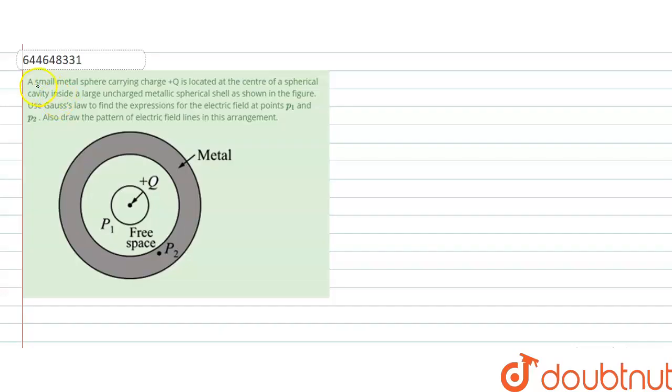The question is that a small matter sphere carrying charge plus Q is located at the center of the sphere cavity inside a large uncharged metallic sphere shell. As shown in the figure.